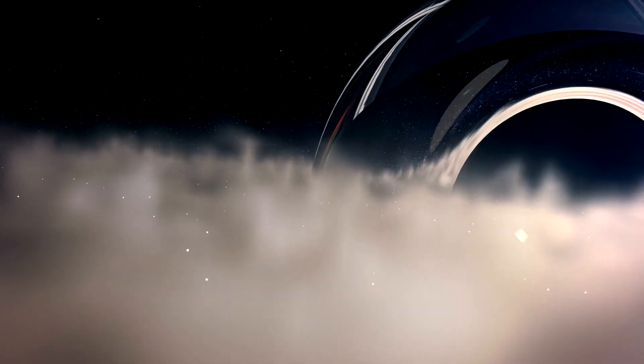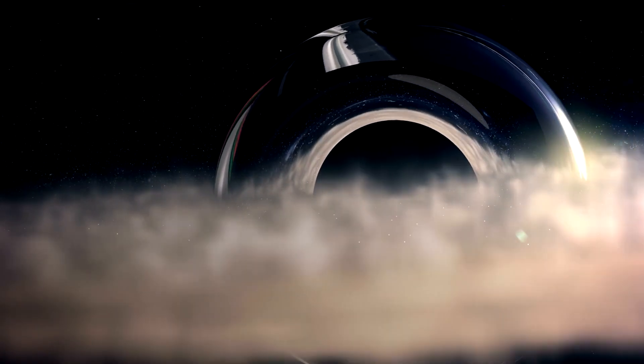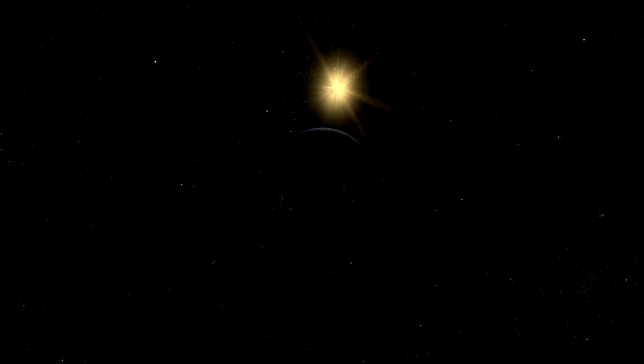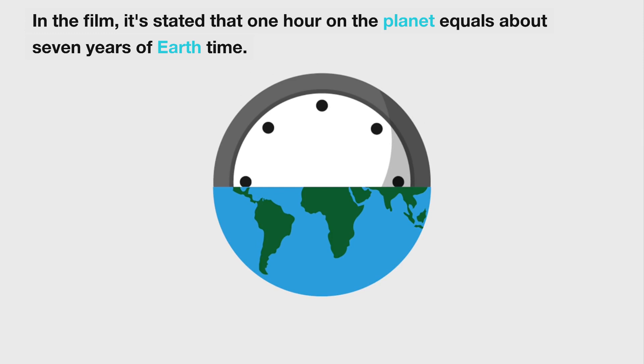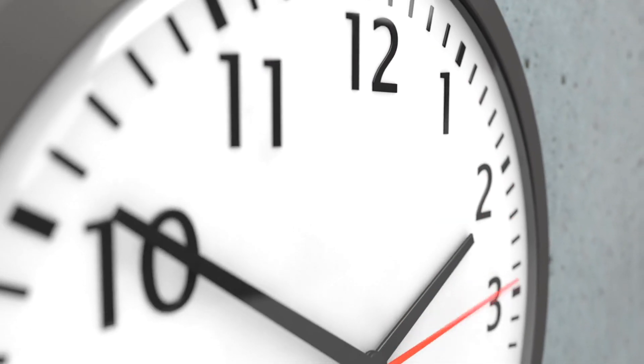According to general relativity principles, a strong gravitational field can significantly affect the flow of time. This phenomenon is known as gravitational time dilation. In the film, it's stated that one hour on the planet equals about seven years of Earth time. This is an example of the concept of time slowing down in the presence of a massive gravitational field.